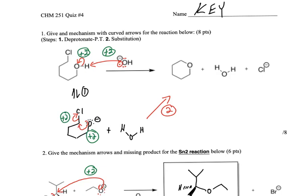Quiz four key. Okay, give the mechanism with curved arrows for the reaction below. I told you it's two steps. First step is deprotonate, a proton transfer, then a substitution.